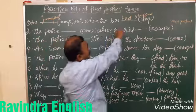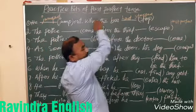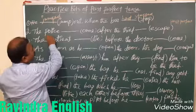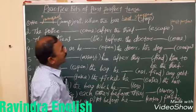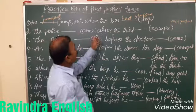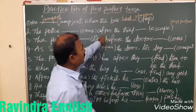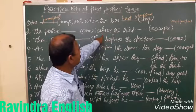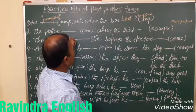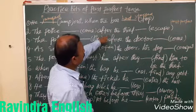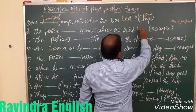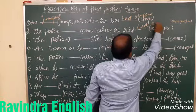The earlier work goes in past perfect tense, and the latter work goes in simple past tense. Next: 'The police dashed come after the thief dashed escape.' The police came after the thief had escaped — the past perfect tense form is 'had escaped.'